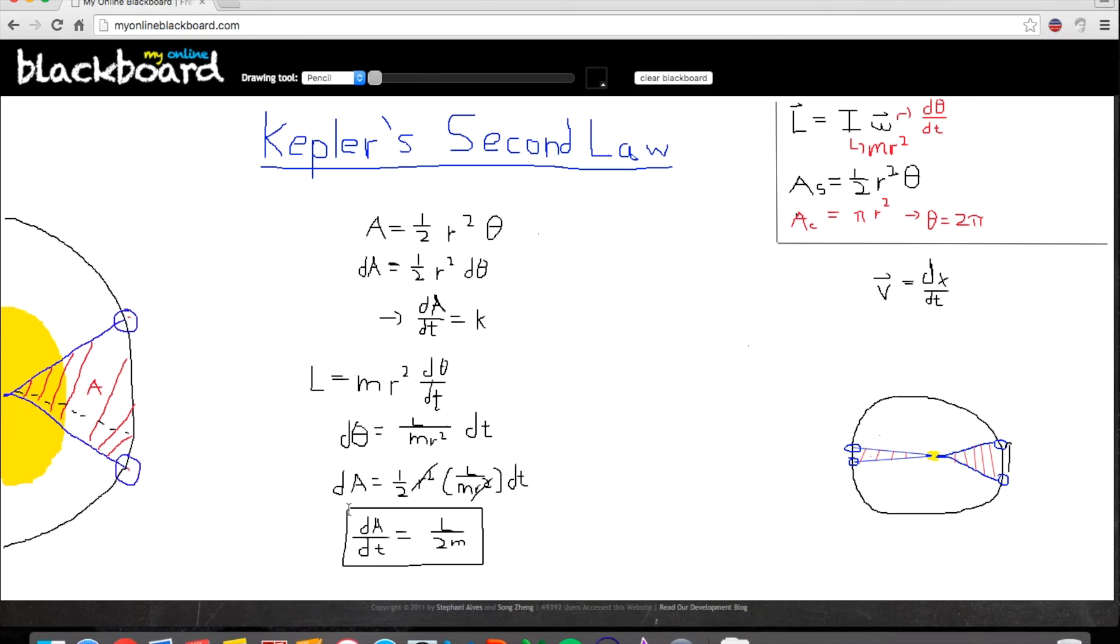Like I said just now, dA over dt should be a constant k. And we know from the conservation of angular momentum that L is constant. And the mass is always the same because when it moves around, it's not like it's undergoing great changes in terms of its mass. And the 2 is just a number. It's a constant number. So, we get that the rate of change of area with respect to time is L over 2m.